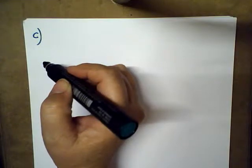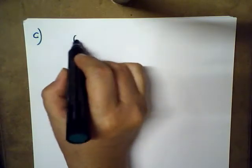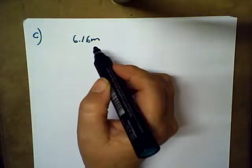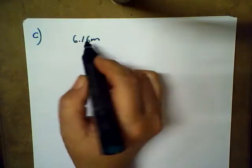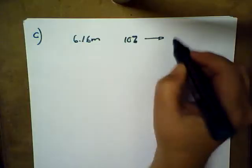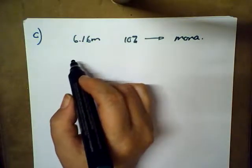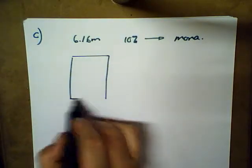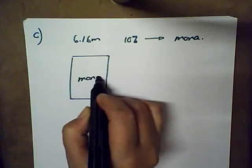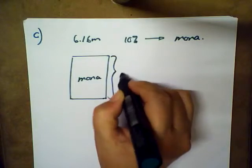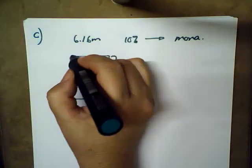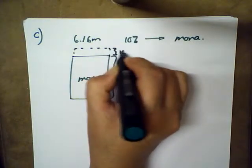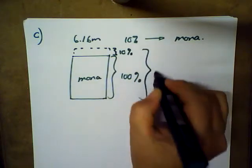Let's continue. Question C: Pamela won the long jump competition with a jump of 6.16 meters. This was 10 percent further than Mona's jump. How far did Mona jump? Let's start with a little box. We want the original in the box, so Mona would be in the box. Mona jumped 100 percent of her distance, but then Pamela came and she jumped a further extra 10 percent, so Pamela's would be 110 percent.